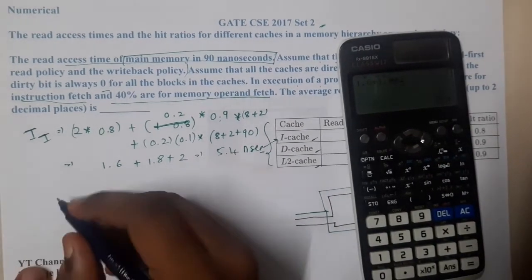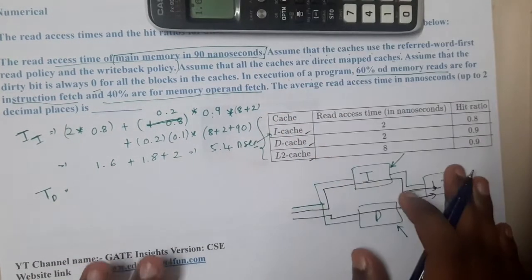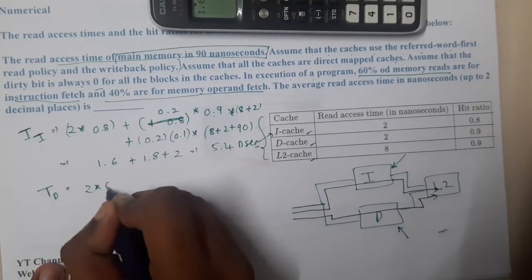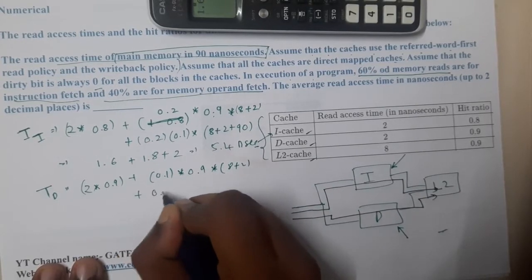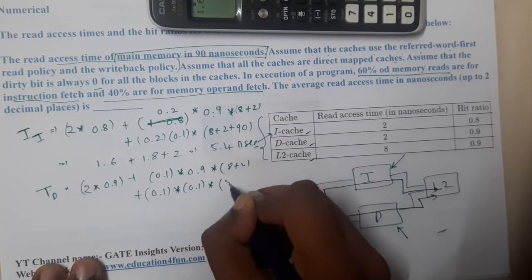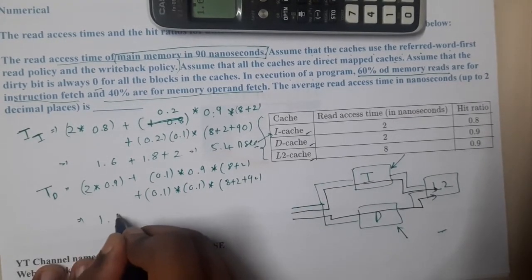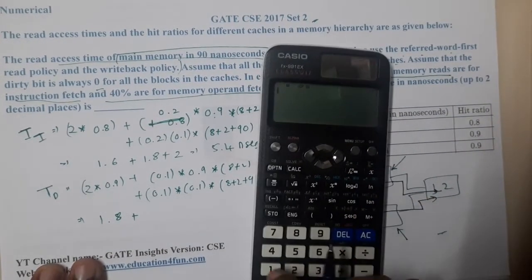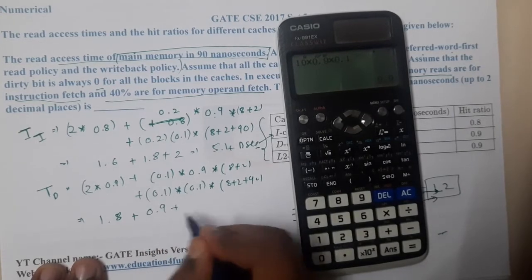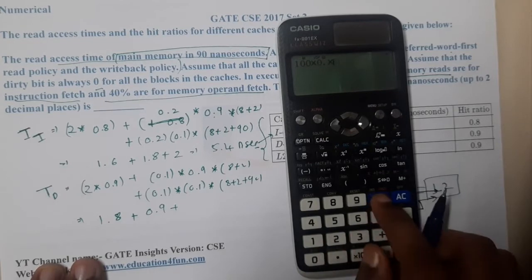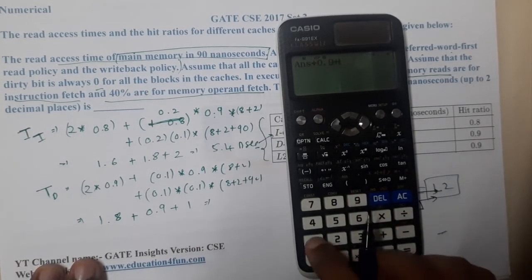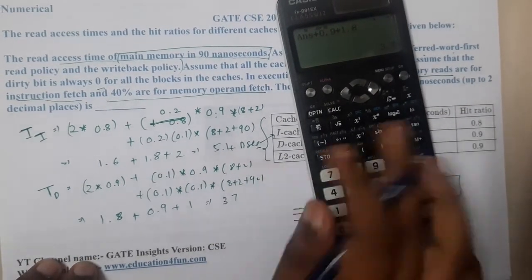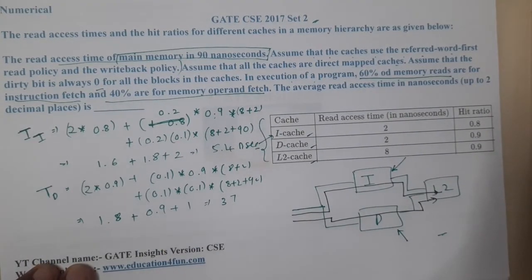For data operand fetch, T_d = 2×0.9 + 0.1×0.9×(8+2) + 0.1×0.1×(8+2+90). So T_d = 1.8 + 0.1×0.9×10 + 0.1×0.1×100 = 1.8 + 0.9 + 1.0 = 3.7 nanoseconds. Memory operand fetch takes 3.7 nanoseconds.